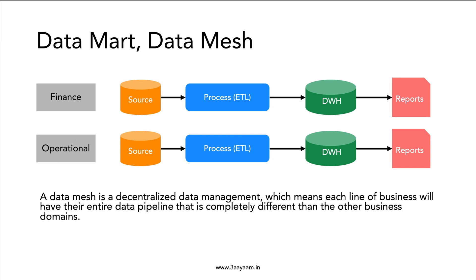A Data Mesh is a decentralized data management approach, which means each line of business has its own entire data pipeline that is completely separate from other business domains. Finance is one business domain, and operations is another business domain. Each team — operations and finance — has its own independent data pipeline.